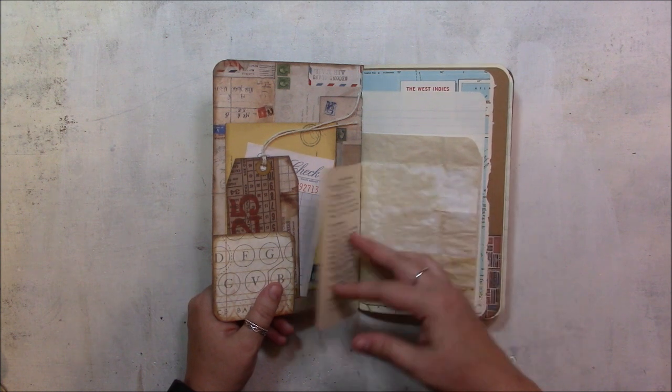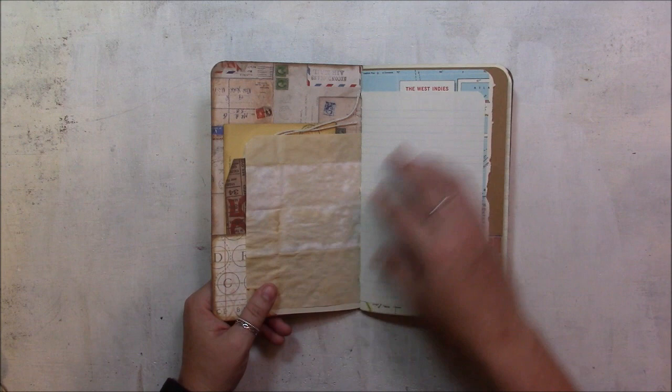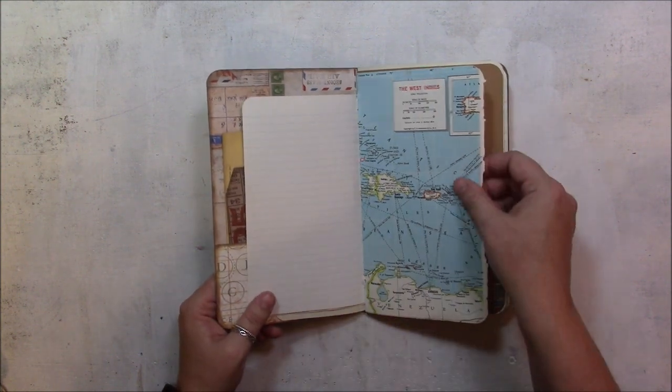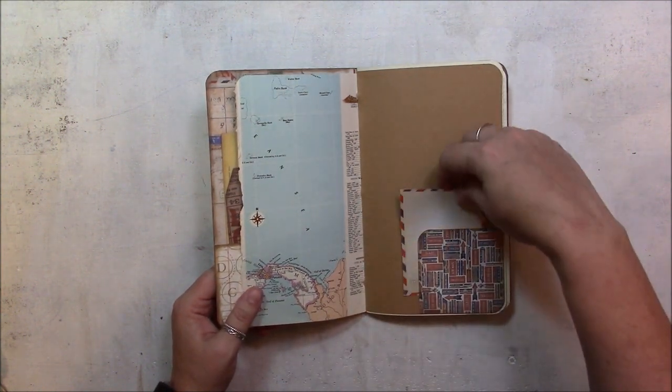This is a little page from an English-Spanish book. So, paper bag, a beautiful map of the West Indies, a little tuck spot there.